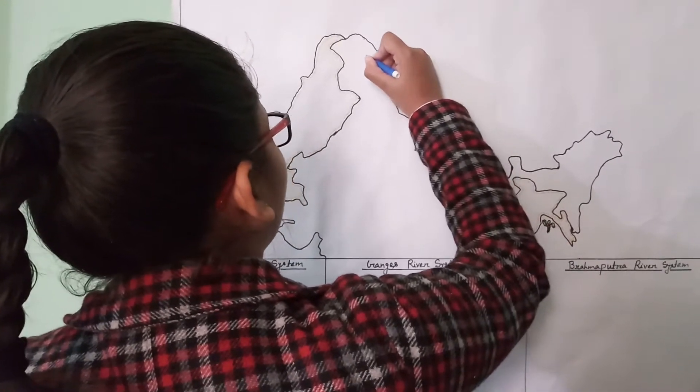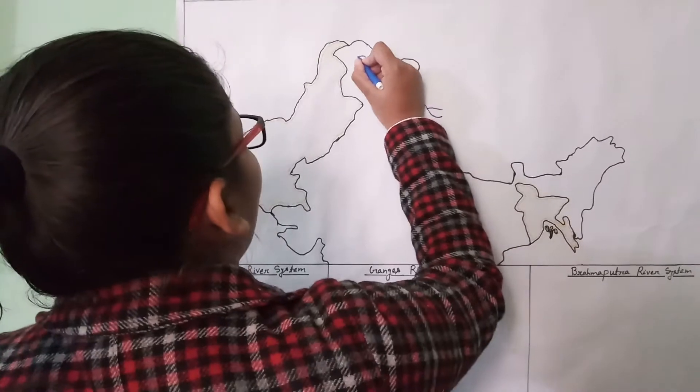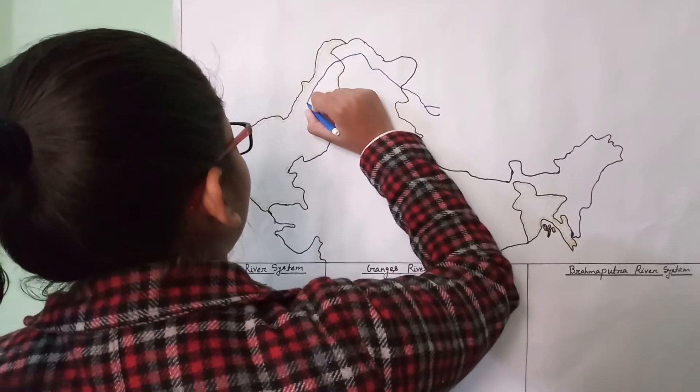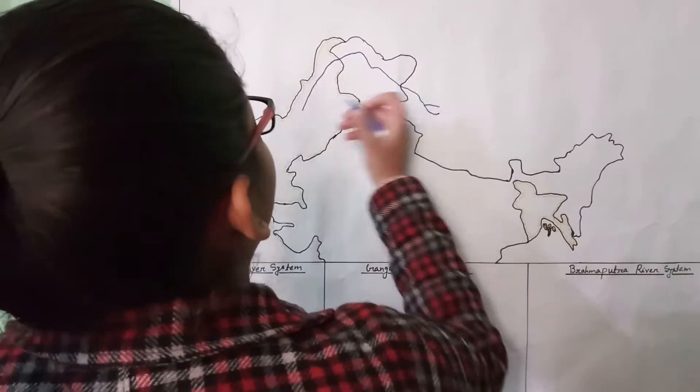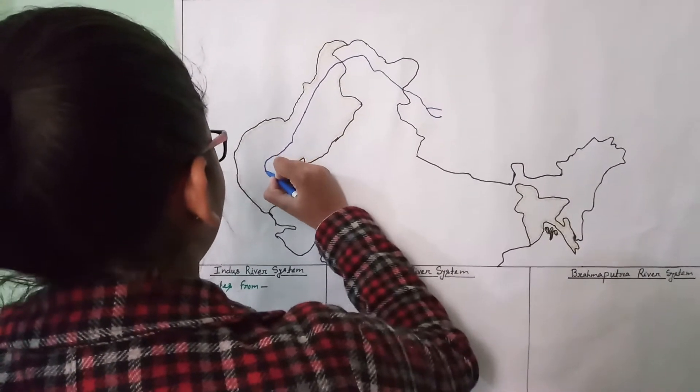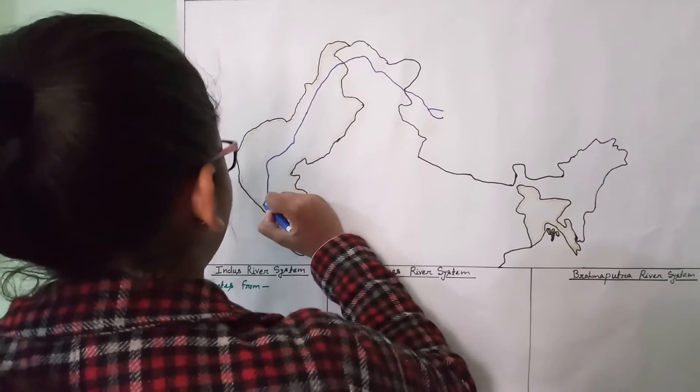So it flows in the northwest direction, and in Jammu and Kashmir it flows in between the Zanskar and Ladakh ranges.